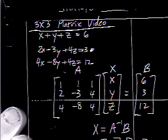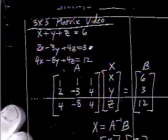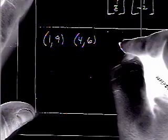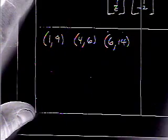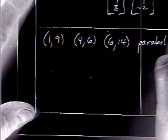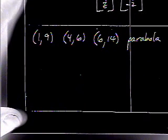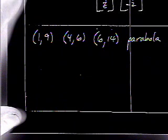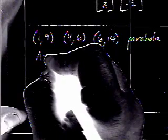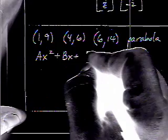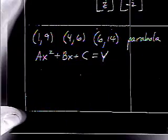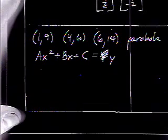Now, we can also use matrices to solve systems of equations to find conics. In other words, what if you gave me the point 1, 9, the point 4, 6, and the point 6, 14, and you told me that those points were on a parabola. And I needed to find the exact parabola that contained these three points. We're going to make ours of the form ax squared plus bx plus c equals y.